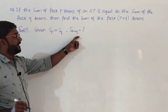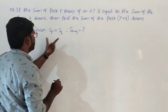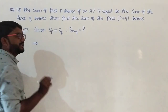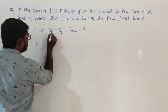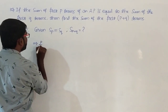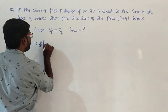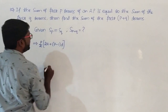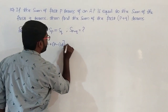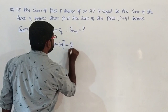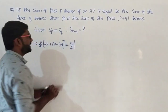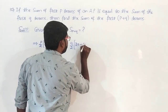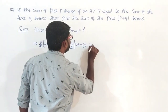To find this we need the values of a and d. Using the formula Sn equals n by 2 times 2a plus n minus 1 into d, with n equal to p: p by 2 into 2a plus p minus 1 into d equals q by 2 into 2a plus q minus 1 into d.